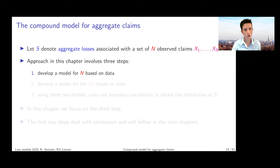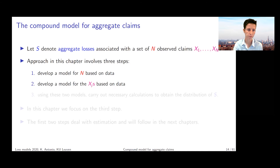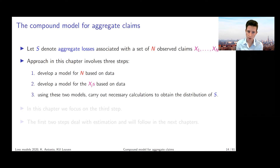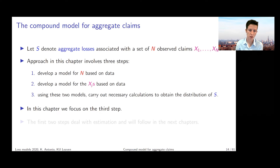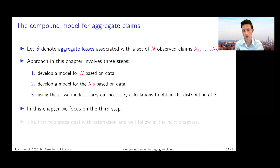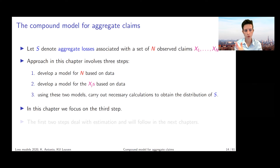First, you would need to build a model for the claim count or frequency random variable given the data available. Second, you would develop a model for the Xj's based on those data. Third, with access to these two fitted models, you carry out the calculations leading to the distribution of S. In this chapter we focus on the third step: given a distribution for N and for the Xj's, what strategies do you have to obtain the distribution of S? For certain cases you can do this analytically; for others you rely on approximations like the central limit theorem.